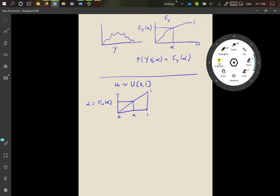So in other words, if u is uniformly distributed, then F_y of alpha, which is the probability that u is less than or equal to alpha, is equal to alpha. So that's another fairly straightforward fact.